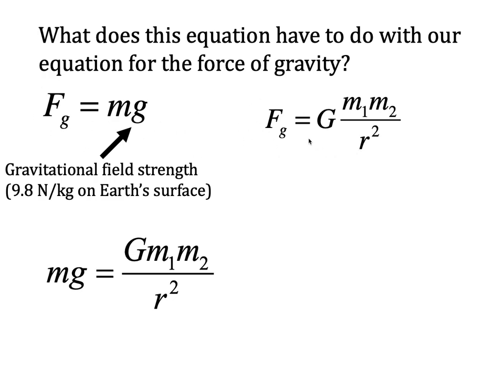They're both equal to this, Fg is equal to this mass, and Fg is equal to this mass. So I'm going to set them equal to each other. So mg equals big G, m, m, over r squared.